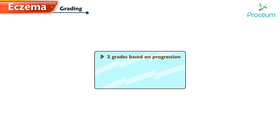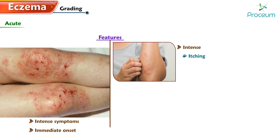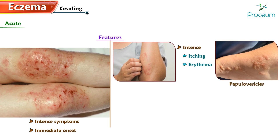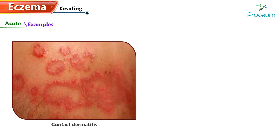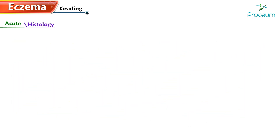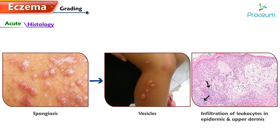Now let's learn about the grading of eczema. Eczema can be classified into three grades: acute, subacute, and chronic. Acute eczema is characterized by intense symptoms and immediate onset. Features include intense itching, intense erythema, papillovesicles, edema, and oozing. Examples include contact dermatitis and pompholyx. Histologically, examination reveals spongiosis leading to vesicles and the infiltration of leukocytes in the epidermis and upper dermis.